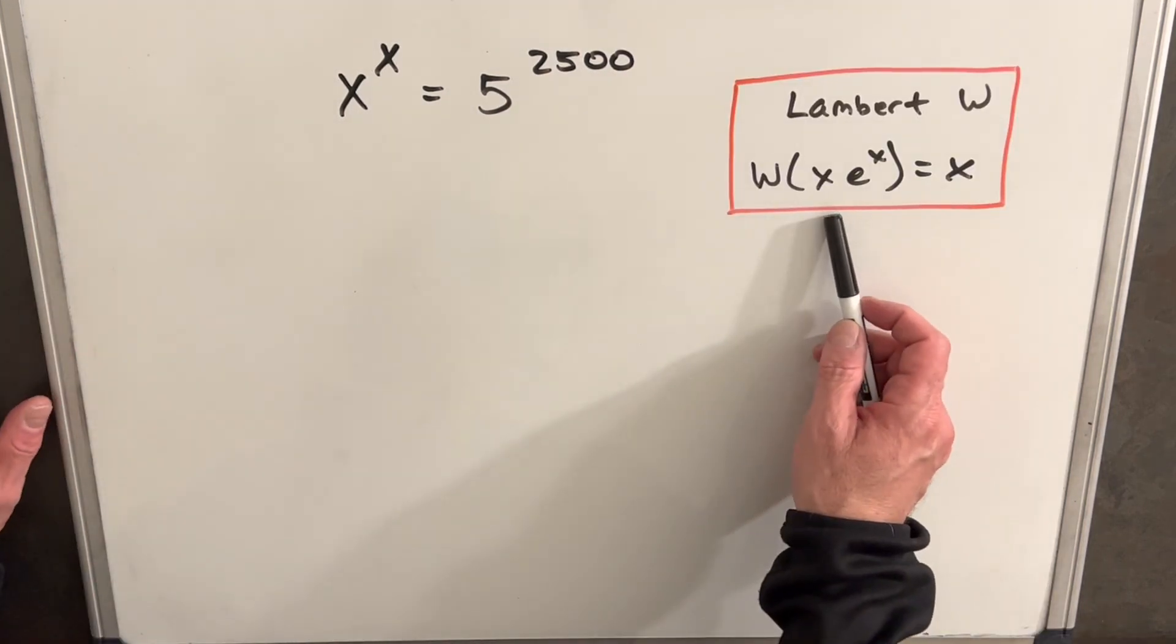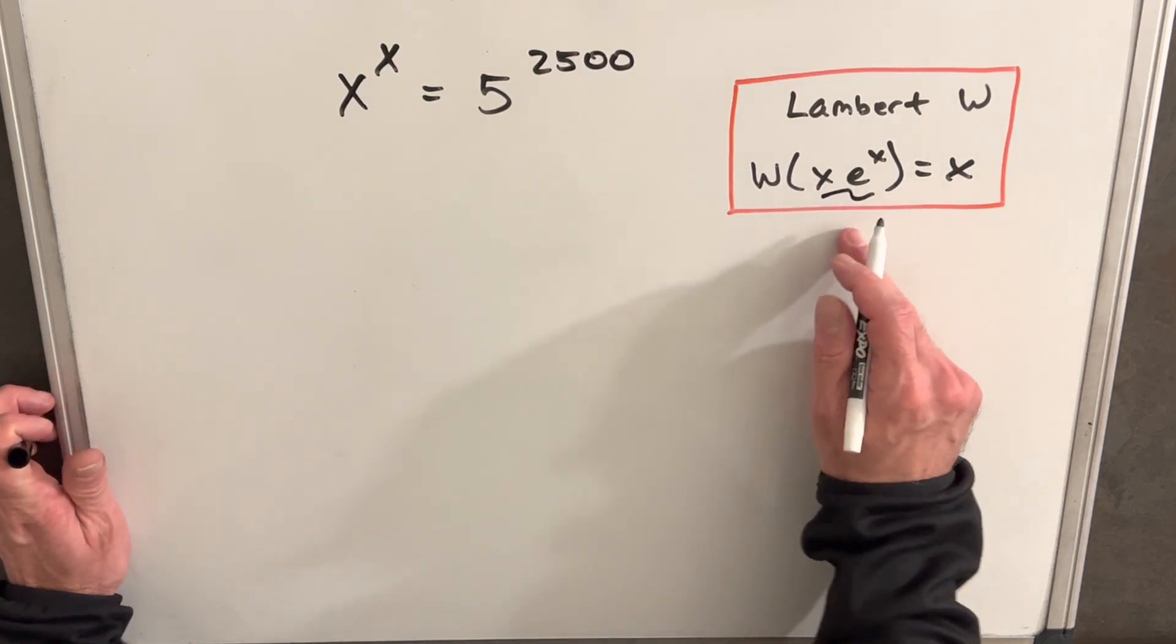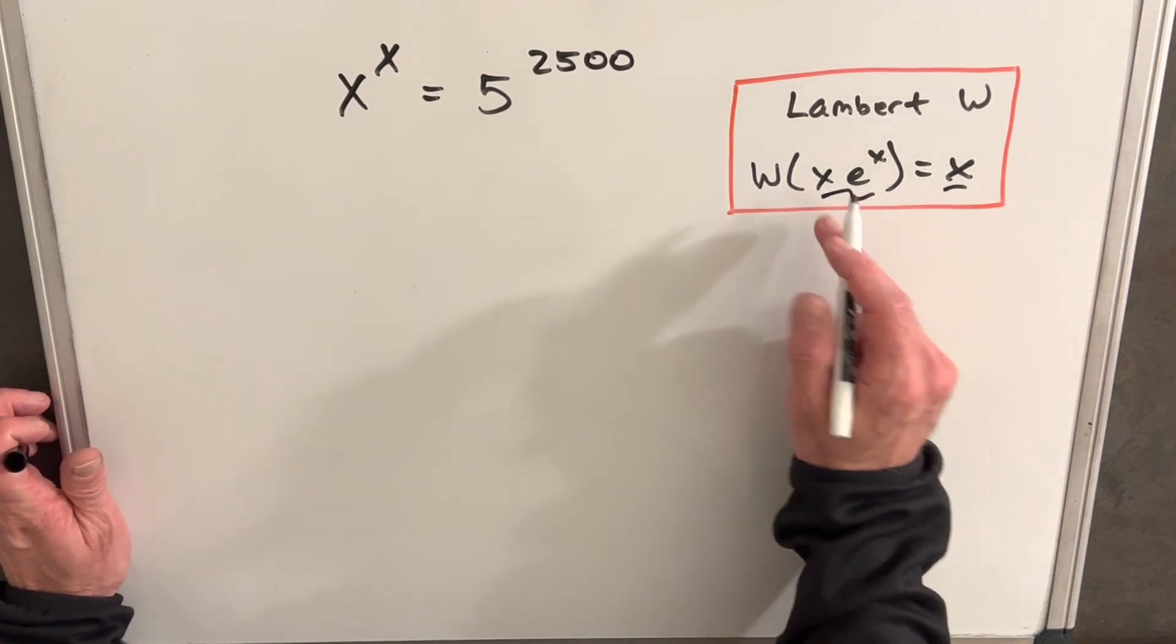Basically, what I want to do is I just want to use this tool over here. If we can get something into this form, you can see the simplification where we can just pull out the input x.